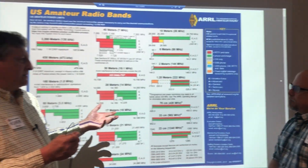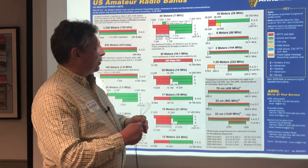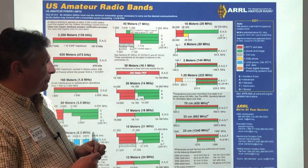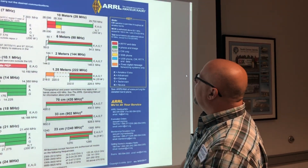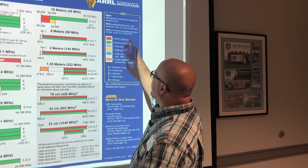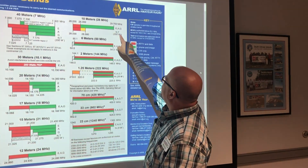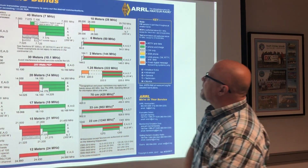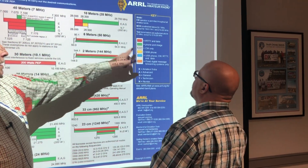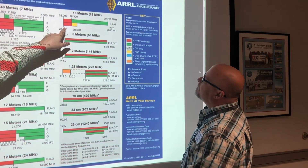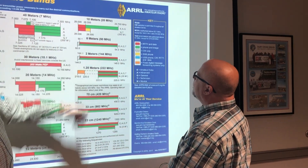People ask about wanting their antenna to work on 10 meters and think they need it to cover from 28 megahertz all the way up to 29.7 megahertz. Well, in most cases with a technician's license, the band plan shows that novice and technician class licenses are allowed to work CW from 28 megahertz up to 28.3, and then phone from 28.3 to 28.5.